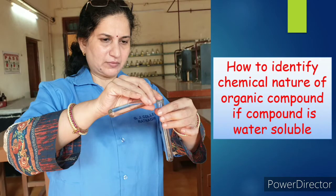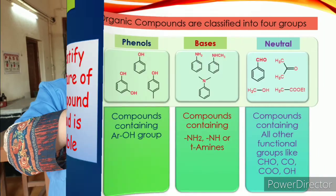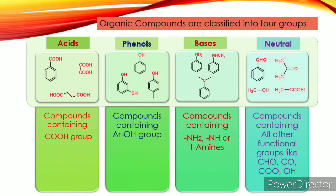Hello friends, this video is in continuation with my earlier video on solubility test. As discussed in that video, organic compounds are classified into four groups depending upon their chemical nature as acids, phenols, bases, and neutral.